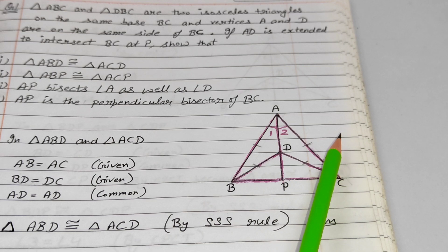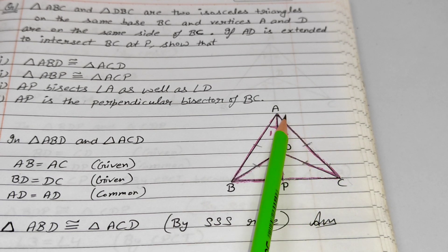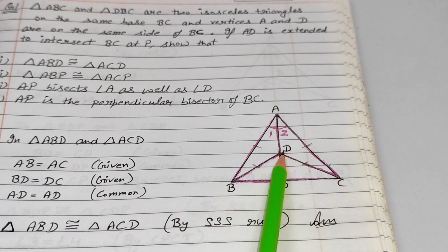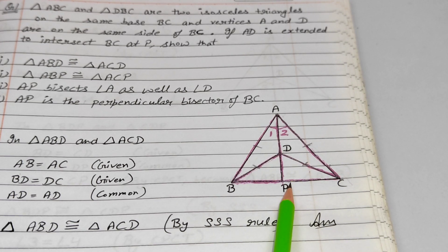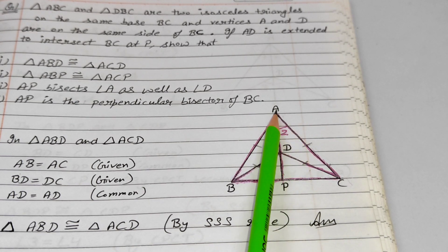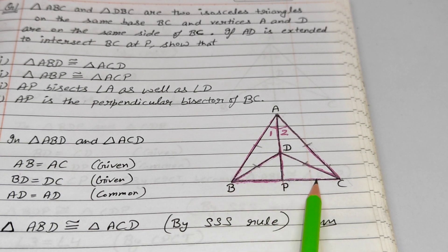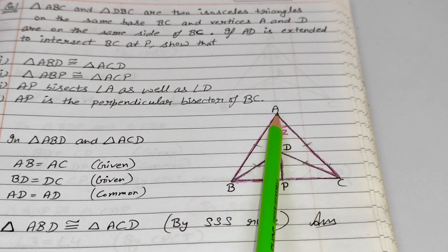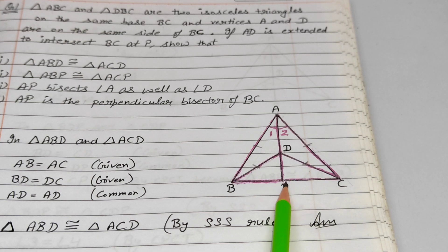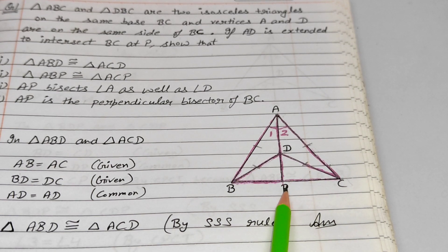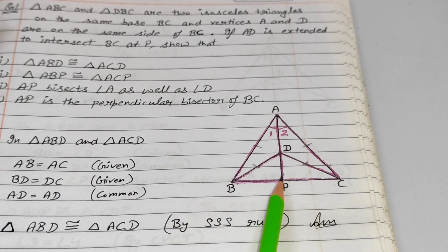After that, vertices A and D are on the same side of BC. If we extend AD further, a point will intersect BC, and that point becomes P. So when we extend AD, we will show what follows in this question.